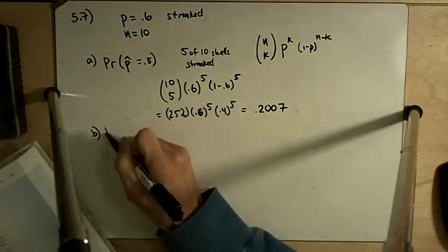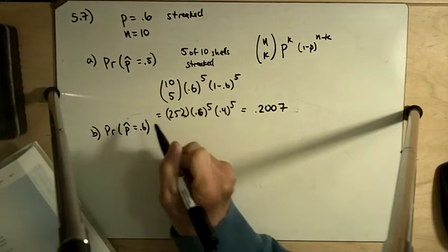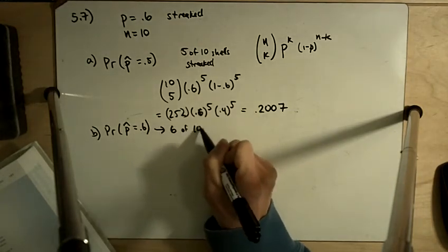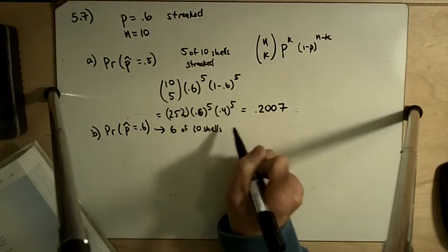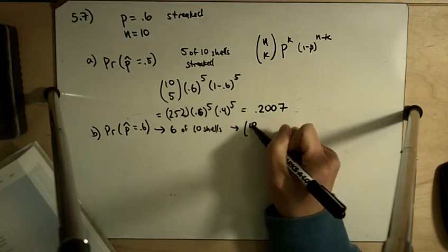Part B asks, what is the probability that P hat is equal to 0.6? And so in this case, that means 6 of 10 shells are streaked.